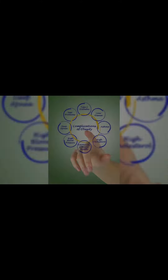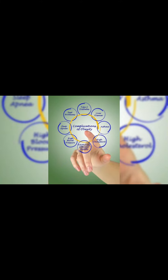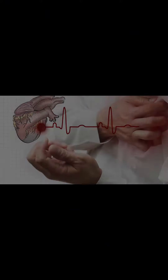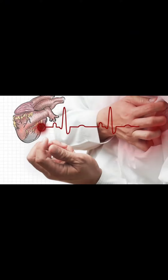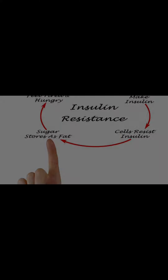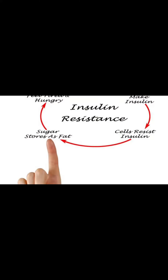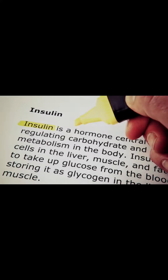Hyperglycemia — high blood sugar due to insufficient insulin. Symptoms include frequent urination, thirst, and fatigue. Long-term complications include heart disease, kidney failure, and neuropathy. Insulin resistance is a condition where the body's cells don't respond well to insulin.